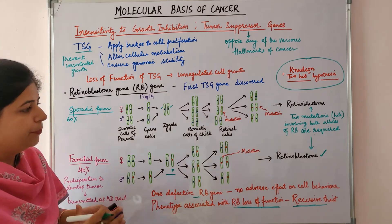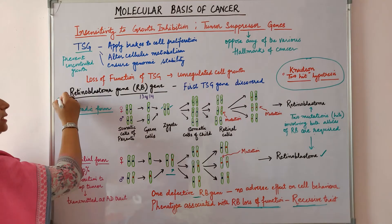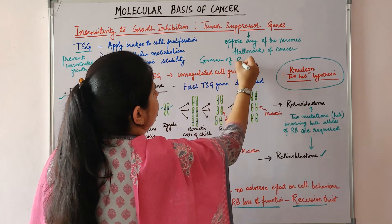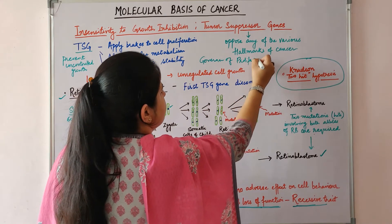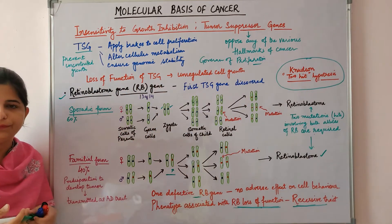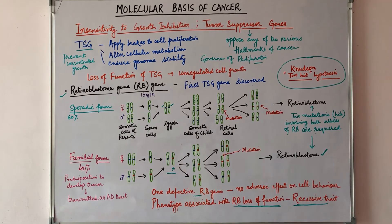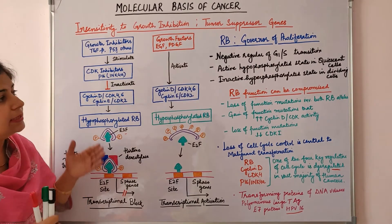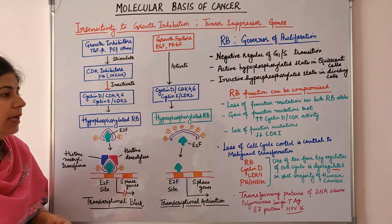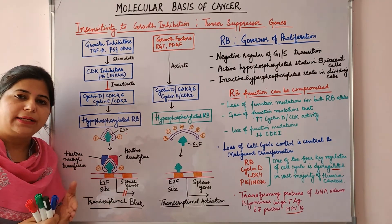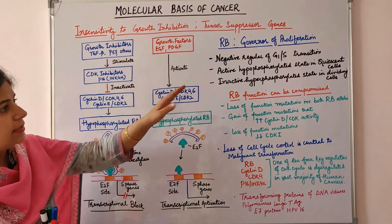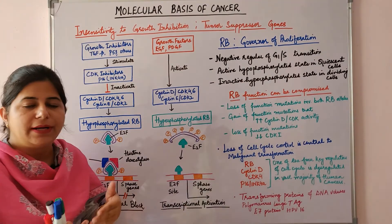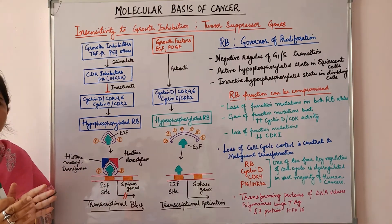The RB gene is also called the governor of proliferation. It is a negative regulator of G1 to S cell cycle progression and is directly or indirectly inactivated in many human cancers. It exists in an active hypophosphorylated state in quiescent cells and an inactive hyperphosphorylated state in dividing cells or cells passing through the G1 to S transition.